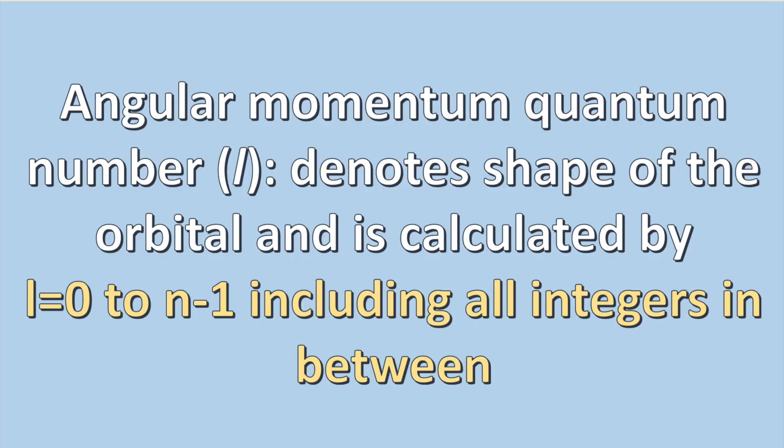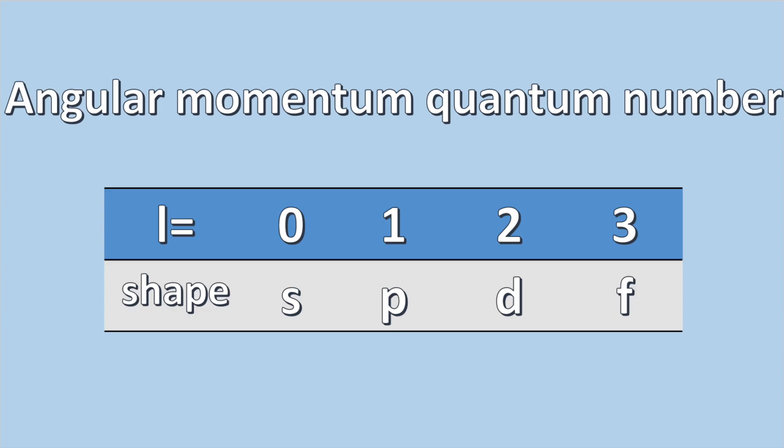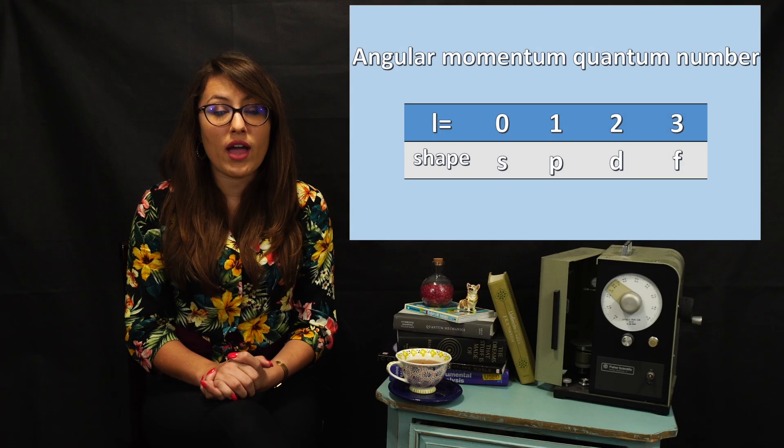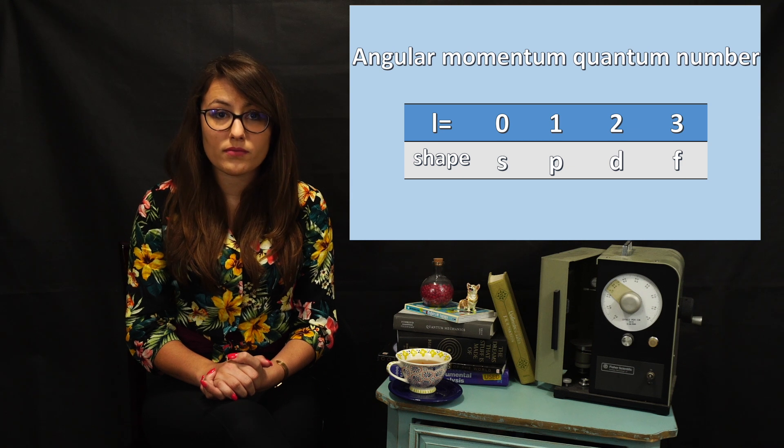The second quantum number is the angular momentum quantum number, which is denoted by l, and denotes the shape of the orbital. This quantum number is calculated by l = 0 to n − 1, including all integers in between. Each calculated value of l corresponds to a specific orbital shape: when l = 0, this is an s orbital; when l = 1, this is a p orbital; when l = 2, this is a d orbital; and when l = 3, this is an f orbital. This quantum number is like the zip code, because now we are identifying which orbital this electron can be located at.